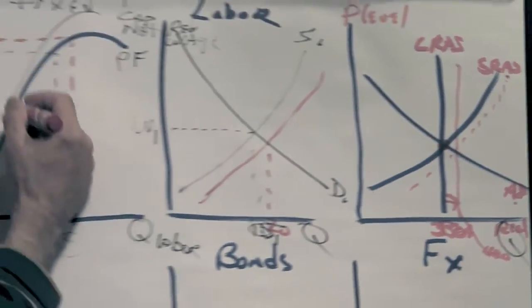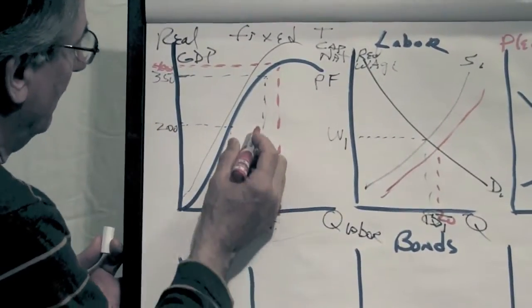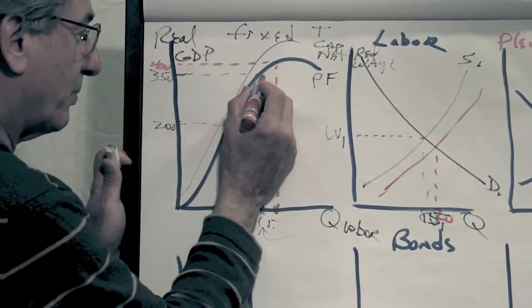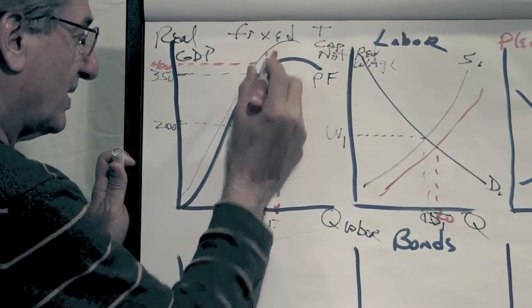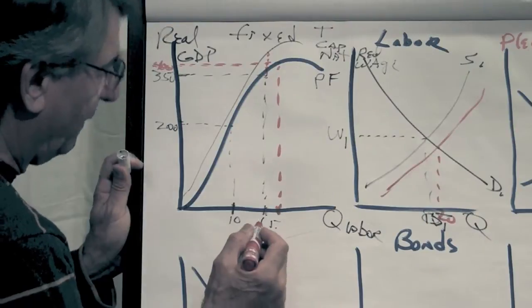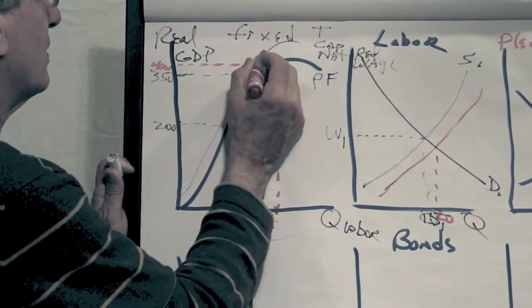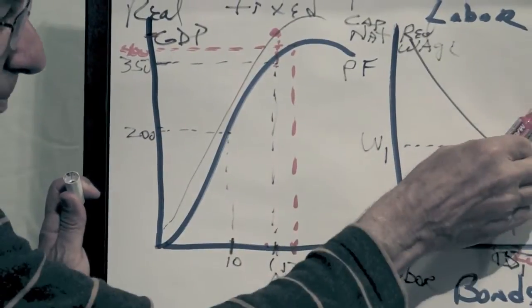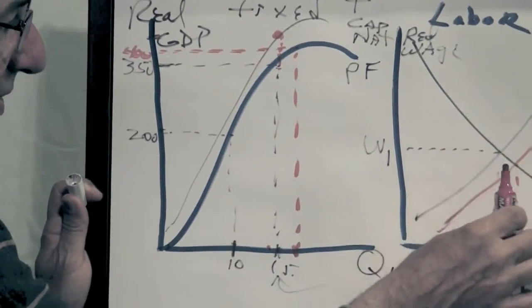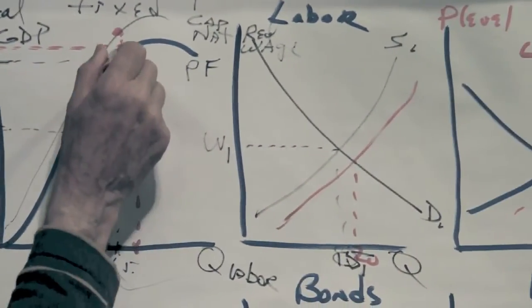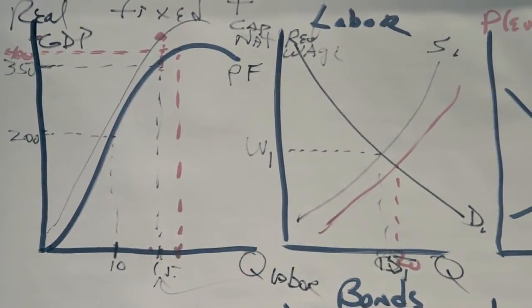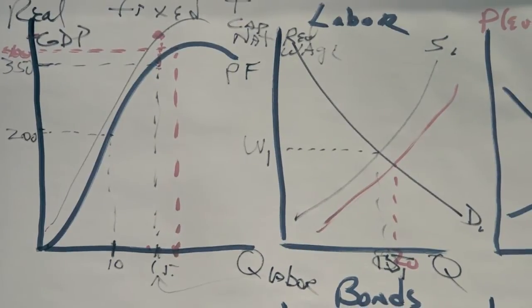One last little bit is if capital increases, for instance, or technology improves, that would cause this production function to shift upward. And so with the same, I don't know, 15 million workers working, we can now get more output, even if the labor supply does not increase. With 15 million workers working, we can now get more production because we've got better technology, more capital, more natural resources.